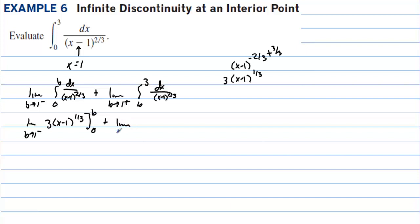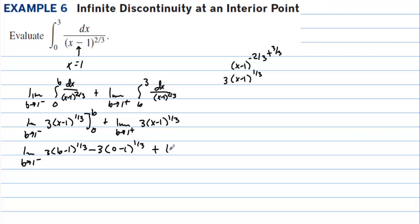Plus the limit as b approaches 1 from the right of 3 times (x minus 1) to the 1 third, evaluated from b to 3. Expanding: the limit as b approaches 1 from the left of 3 times (b minus 1) to the 1 third, minus 3 times (0 minus 1) to the 1 third, plus the limit as b approaches 1 from the right of 3 times (3 minus 1) to the 1 third, minus 3 times (b minus 1) to the 1 third.